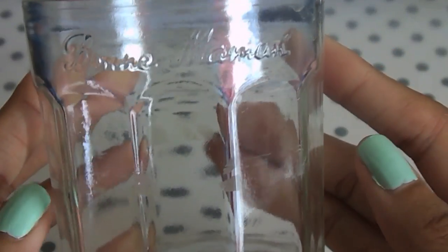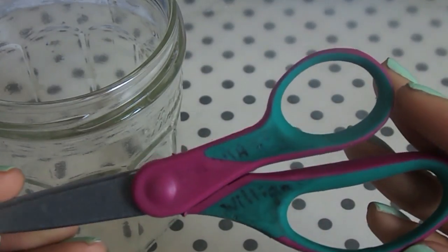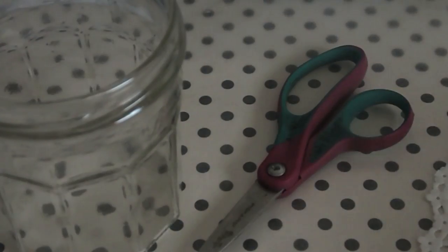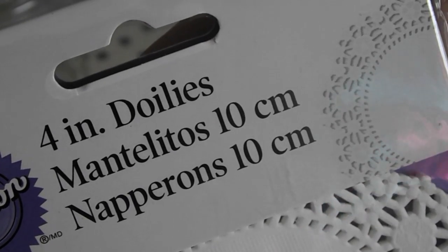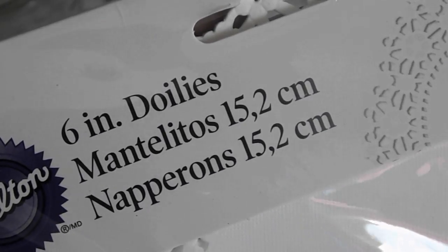So you're just going to need a jar that you're going to decorate, some scissors, a larger doily and a smaller doily, and here are the sizes for both of them. And to decorate you're going to need some twine and a large paintbrush.